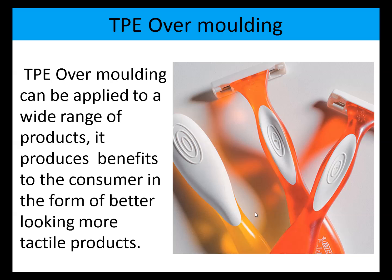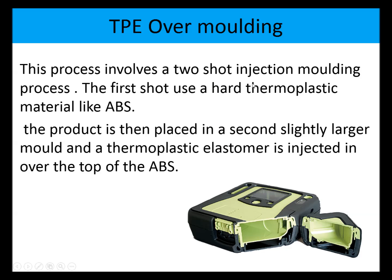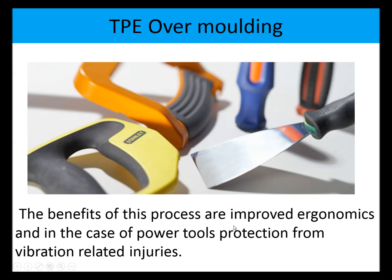TPE overmolding can be applied to a wide range of products and is often used in conjunction with injection molding. For example, these razors are injection molded and then the thermoplastic elastomer is overmolded over the top to form more tactile and better-looking products. This process involves a two-shot injection molding process: the first shot uses a thermoplastic like ABS, then the part is placed in a second slightly larger mold and the thermoplastic elastomer is injected in. Often there are small keys that lock the two parts together. The benefits include improved ergonomics and, in the case of power tools, protection from vibration-related injuries.